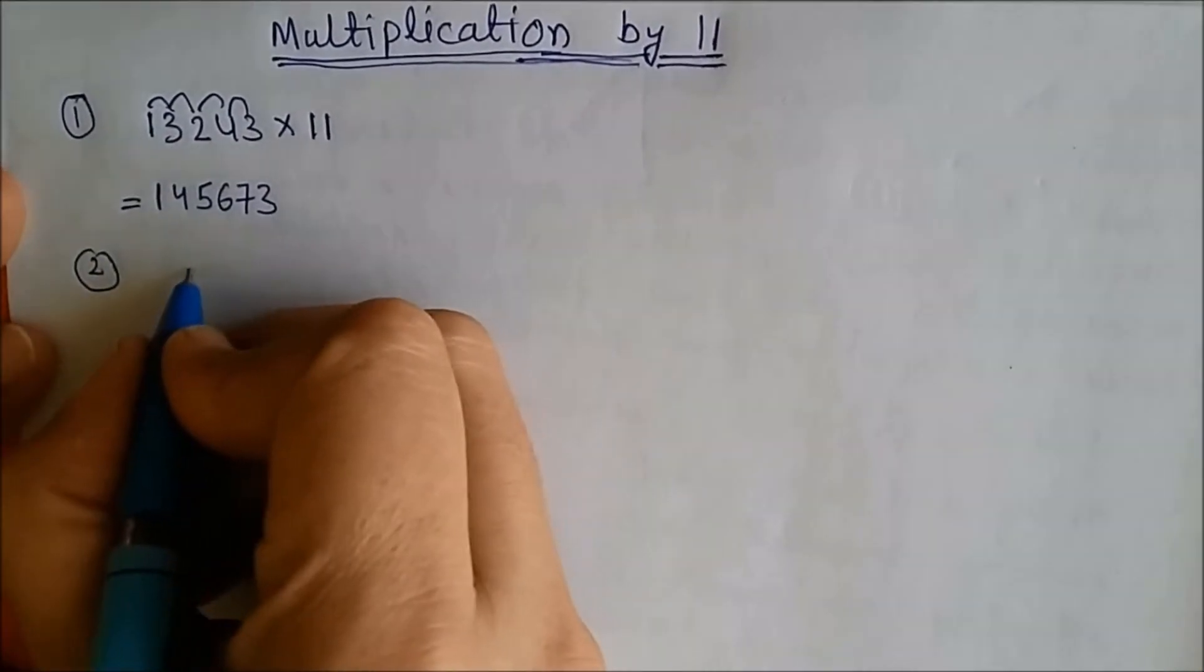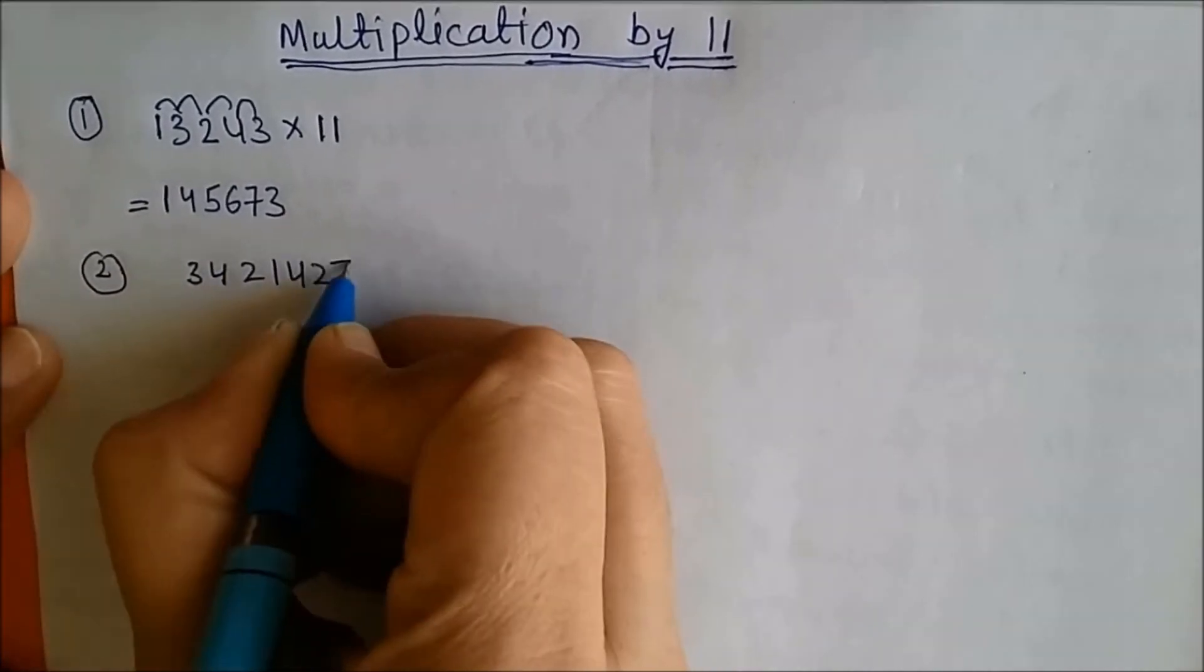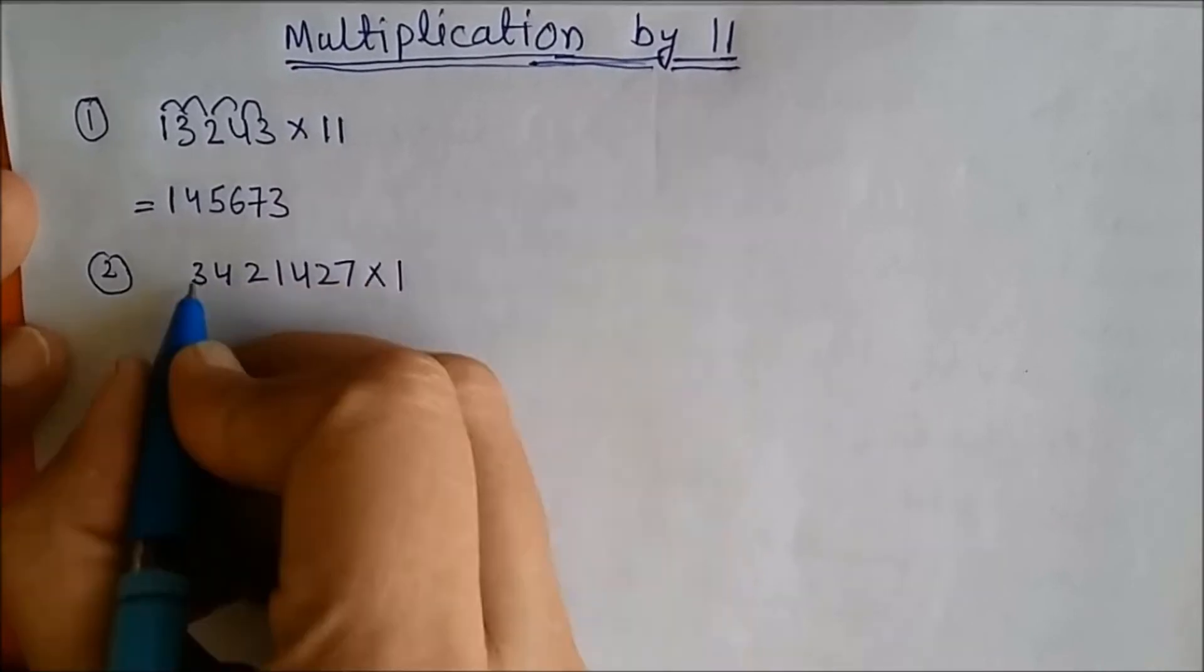Suppose second number, let us take a big number 3421427 multiplied by 11. First number as it is.